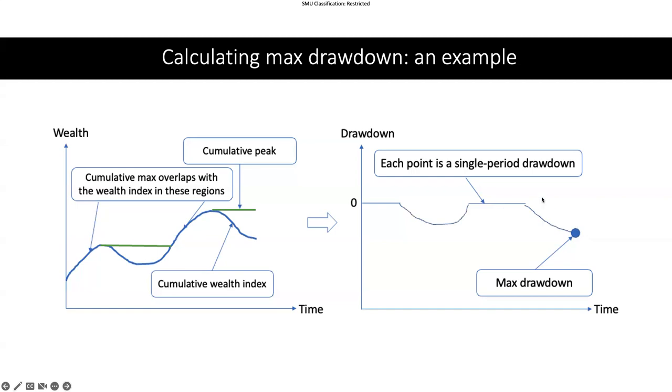This curve is the drawdown curve and we want to look at the maximum drawdown. We just take the minimum of this curve. Of course it's in negative terms, but when we usually report it, we report it as a positive measure, positive number, but when we calculate it, we take the minimum of the whole drawdown curve because it is a negative value.